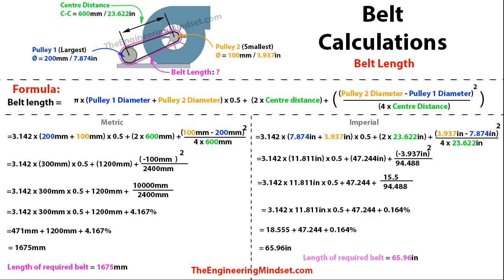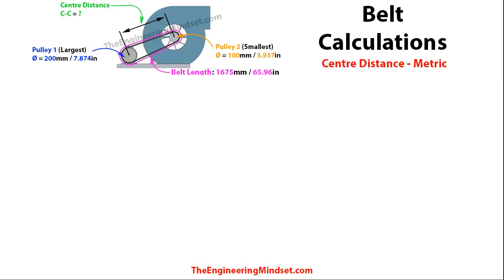The belt length comes out at 1675 millimeters, or 65.96 inches. So it's not as hard as it looks — it's actually fairly simple. For the next part we're going to calculate the center distance, metric first. It's quite long-winded so I wasn't able to fit both metric and imperial on one screen. If you need the imperial version you can skip ahead slightly; otherwise stick with us for the metric calculation.